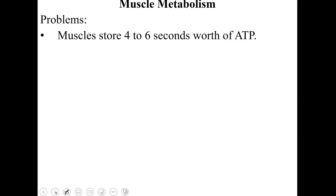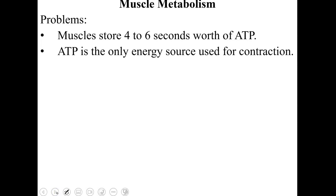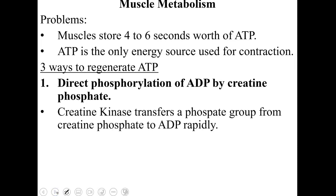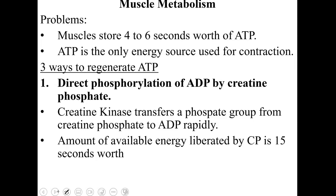Muscle metabolism: muscles store about four to six seconds worth of ATP — your energy molecule and the only energy source that can be used for contractions. There are three ways to regenerate ATP in the muscle. First is direct phosphorylation of ADP by creatine phosphate: the phosphate from creatine phosphate is hooked onto ADP to make ATP again. Creatine kinase transfers that phosphate group rapidly. The amount of energy liberated by creatine phosphate is about 15 seconds worth, and creatine phosphate is replenished during rest.